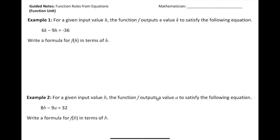For the first example, Example 1, it states: for a given input value h, the function f outputs a value k to satisfy the following equation. That's a lot of mumbo jumbo algebraically. For a given input value h, that's what we're going to put in. The function f outputs a value of k. k is going to be like our y, which is like our f(x). We have 6k - 9h = -36.